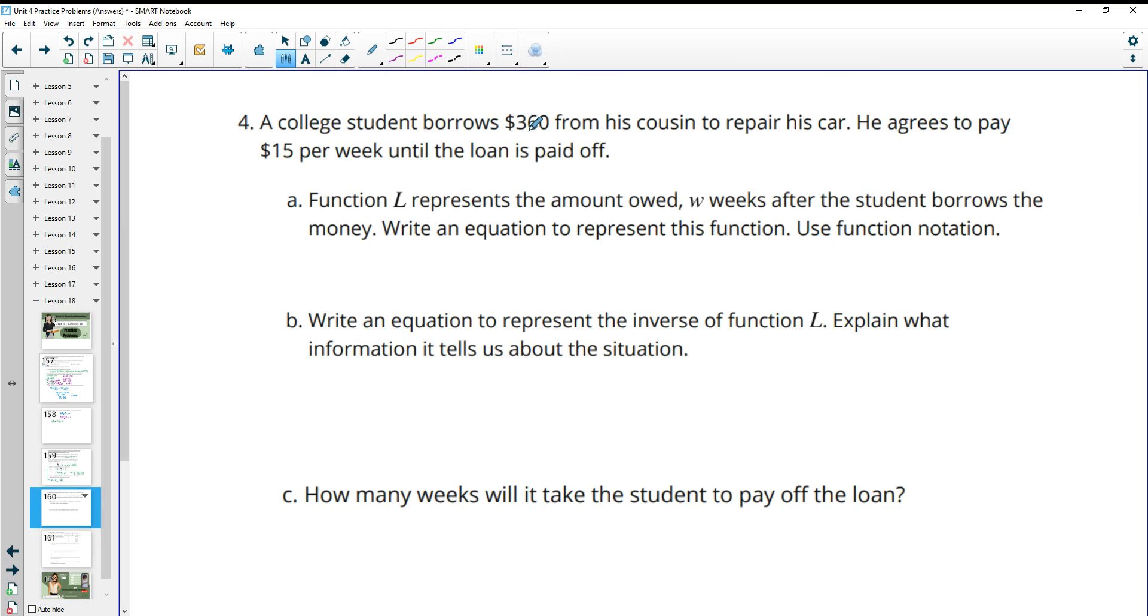Number 4, a college student borrows $360 from his cousin to repair his car. He agrees to pay $15 a week until the loan is paid off. Function L represents the amount owed W weeks after the student borrows the money. Write an equation to represent this function. So L of W is the loan amount left after however many weeks. This person started with $360, and then they're going to pay off $15 per week. So it's going to be $360 minus $15 a week that they're going to pay on that loan.